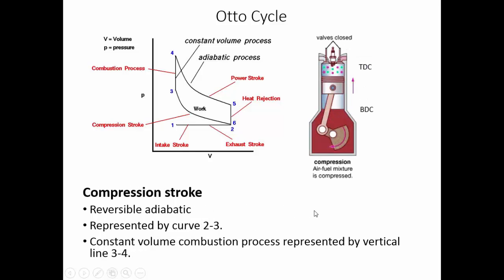In the compression stroke, the piston traverses from the bottom dead center back to the top dead center with both valves closed, compressing the mixture inside. This is represented in the PV diagram by the path from point 2 to point 3. The volume decreases back to its initial value while the pressure is tremendously increased, requiring external work — supplied by cranking, mostly using an electric motor. At the end of this stroke, the spark plug ignites the mixture.